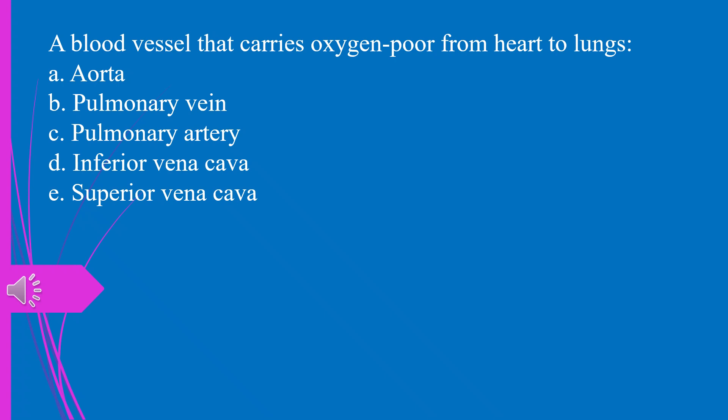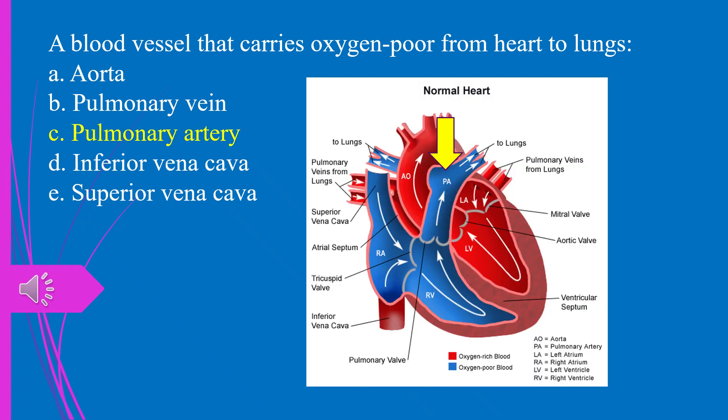Question 1. A blood vessel that carries oxygen poor from heart to lungs. A. Aorta. B. Pulmonary vein. C. Pulmonary artery. D. Inferior vena cava. E. Superior vena cava. The answer is C. Pulmonary artery.